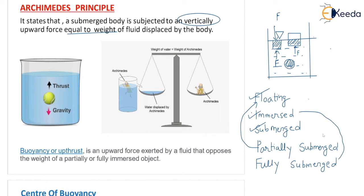So mostly we have three types: floating, immersed, and submerged. But partially submerged is also known as floating condition, and fully submerged is also known as immersed condition. This is very important information — it is not written everywhere and students are mostly confused. Please take care of these points to understand exactly what is given in the problem.